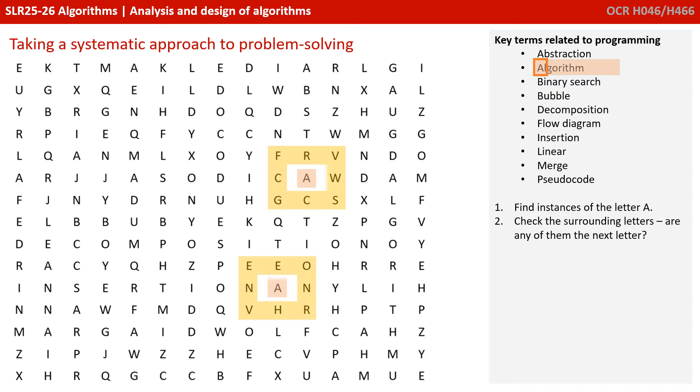But we need a bit more of a logical approach. Once we find the letter we need, we then need to look at all the other letters that are around it and see if any of those letters are the second letter of our word. And if they are, then we need to follow that path to see if we can find any more letters. So we're beginning to find an algorithmic approach to solving the problem of a word search.